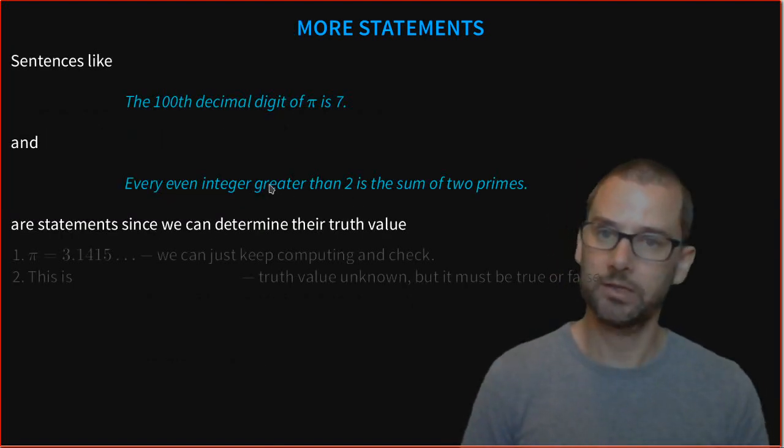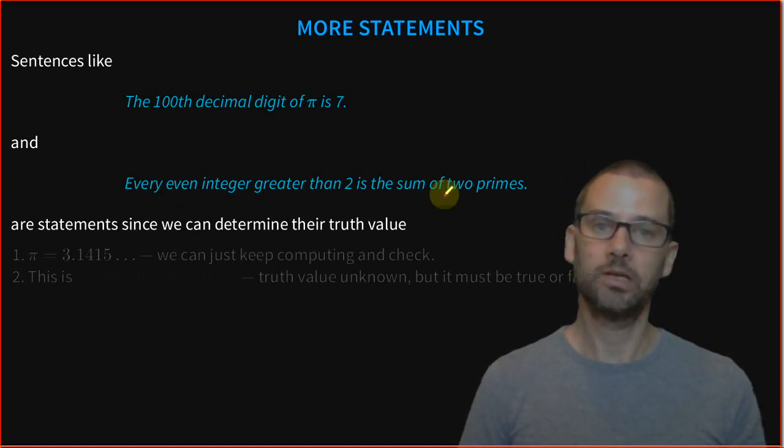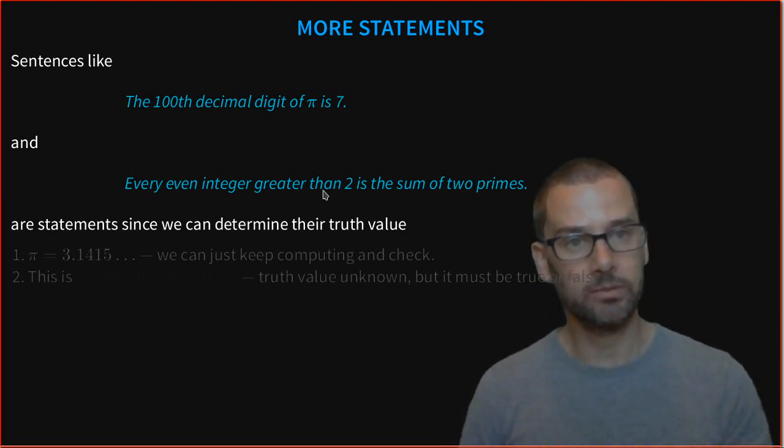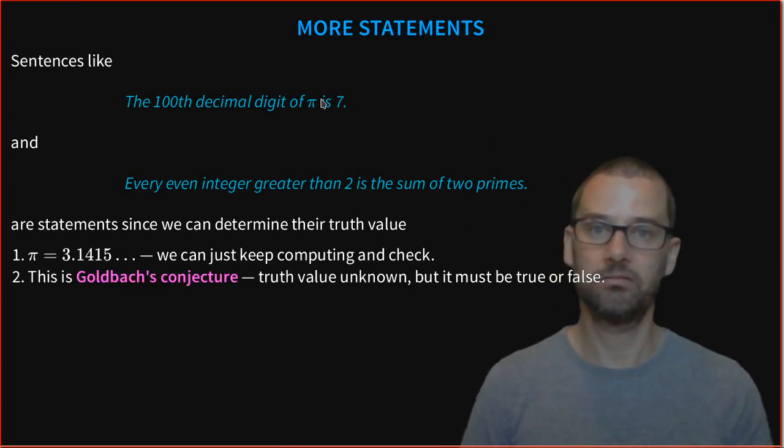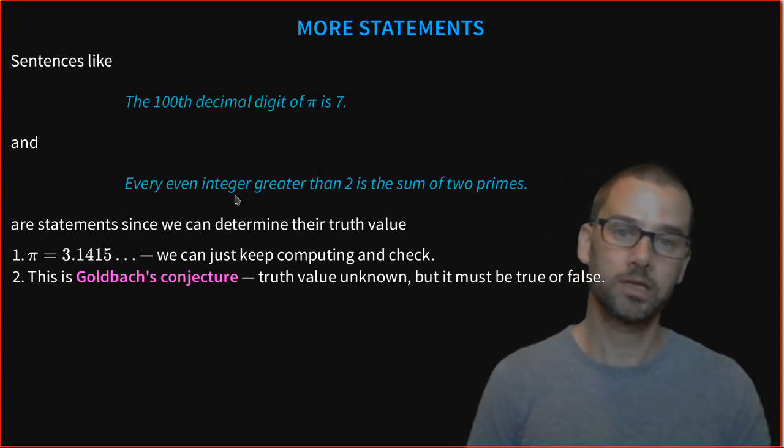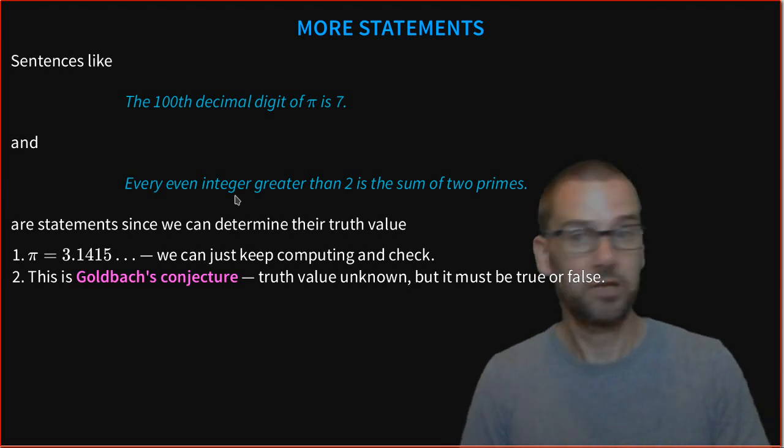Some more statements. The 100th decimal digit of pi is seven. And every even integer bigger than two is the sum of two primes. These statements are actually statements because we can determine their truth value. They're either true or they are false. Now the first one, well, we can get our computer and compute pi to sufficient precision and work out what it is. We can just compute 3.1415 and so forth and just keep going until we get to the 100th digit and check. Is it seven or is it not? Easy.